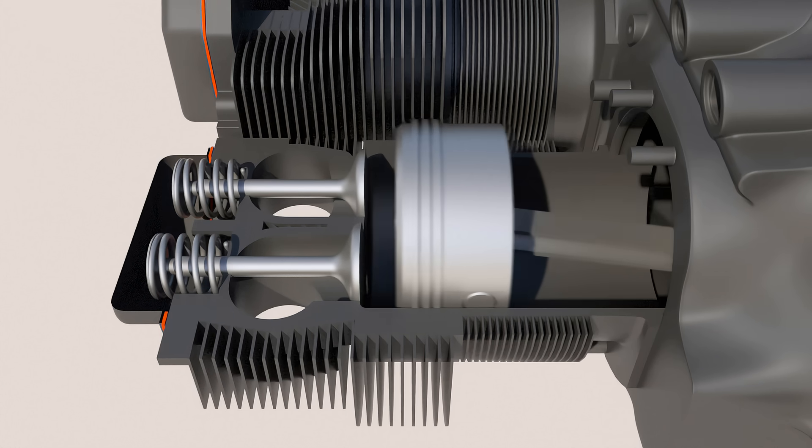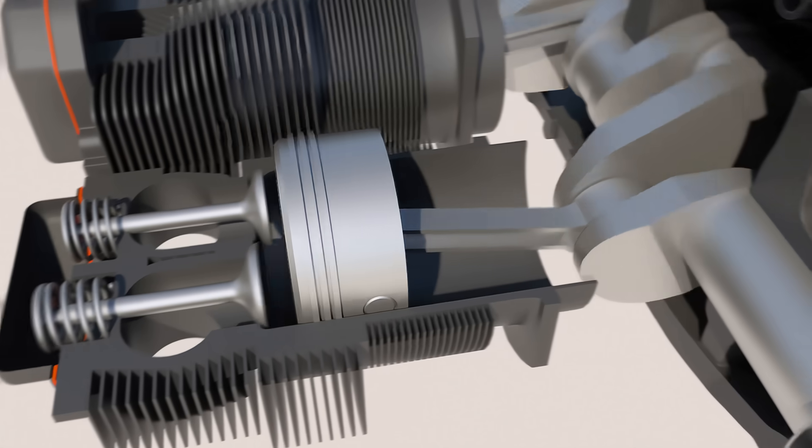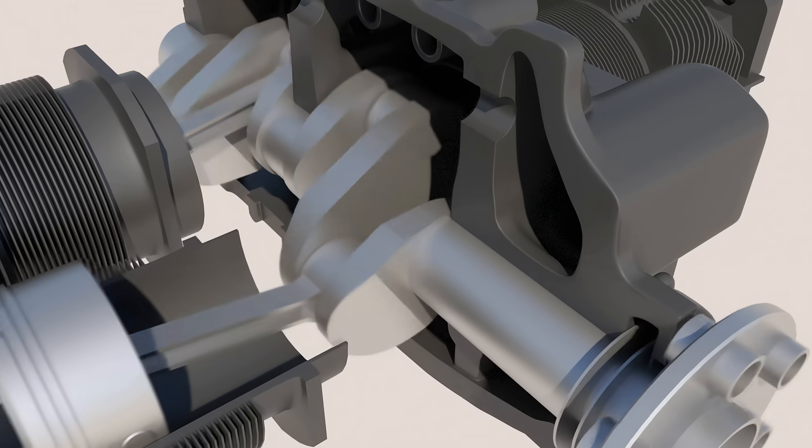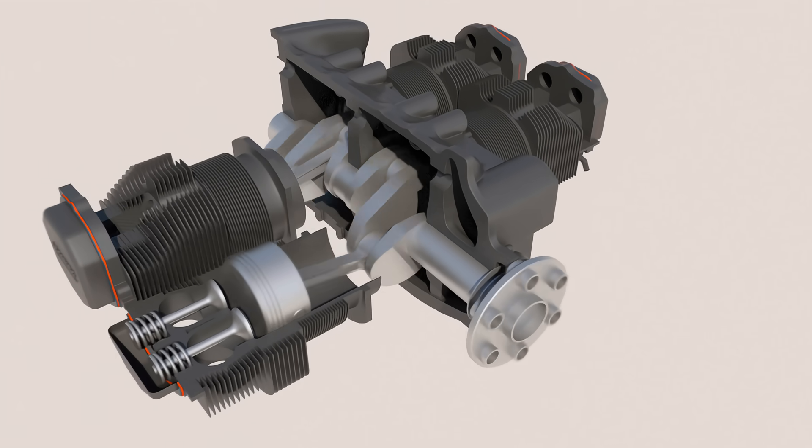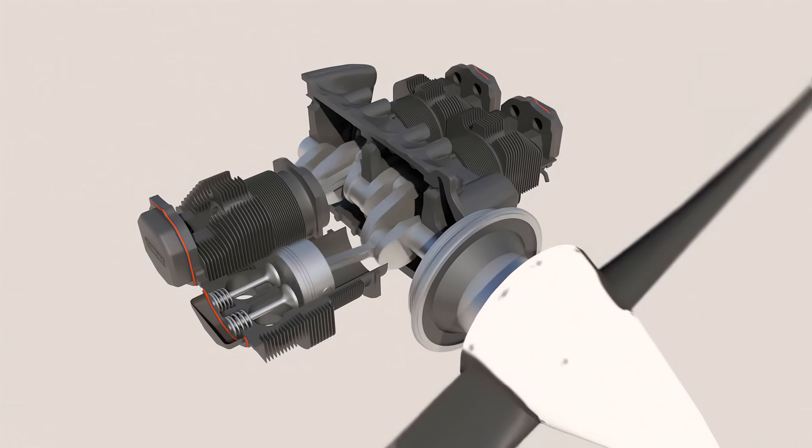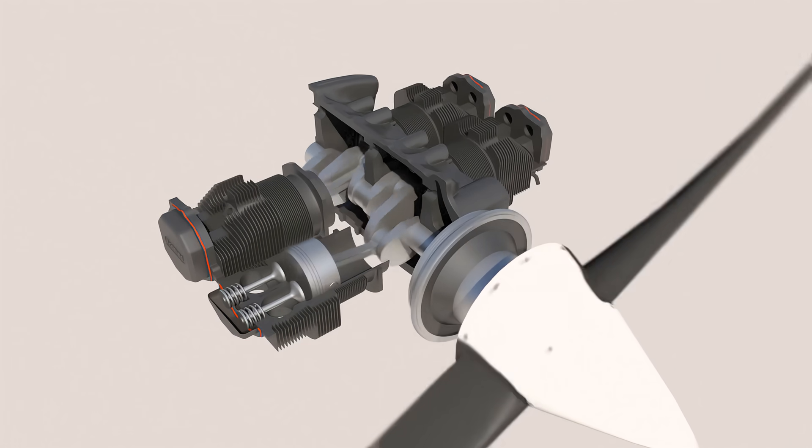As this fuel-air mixture is ignited, its explosive force moves the piston inward. These pistons are connected to a crankshaft, and when the pistons move in and out, that causes the crankshaft to rotate. The propeller is connected to the crankshaft, so as the crankshaft rotates, so does the propeller.